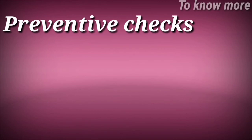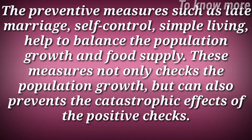Another type of control mentioned by Malthus is preventive checks. Preventive measures such as late marriage, self-control, and simple living help to balance population growth and food supply. These measures not only check population growth but can also prevent the catastrophic effects of the positive checks.